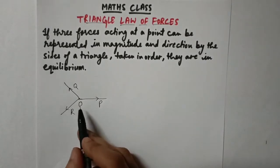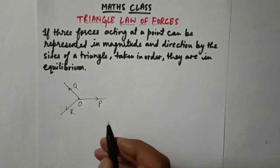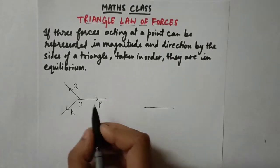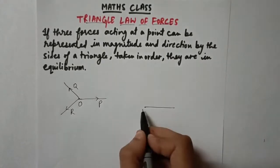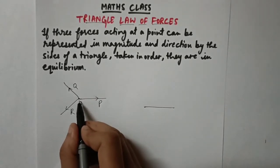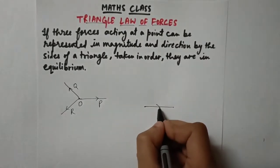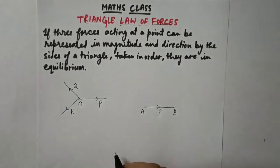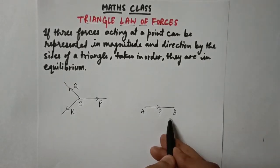Now we need to represent these forces by the sides of a triangle. Let this be the P force here — we need to see that the magnitude and the direction are the same. Yes, the magnitude is similar and the direction is also the same. So let these points be A and B. The P force is represented by the AB side of the triangle.